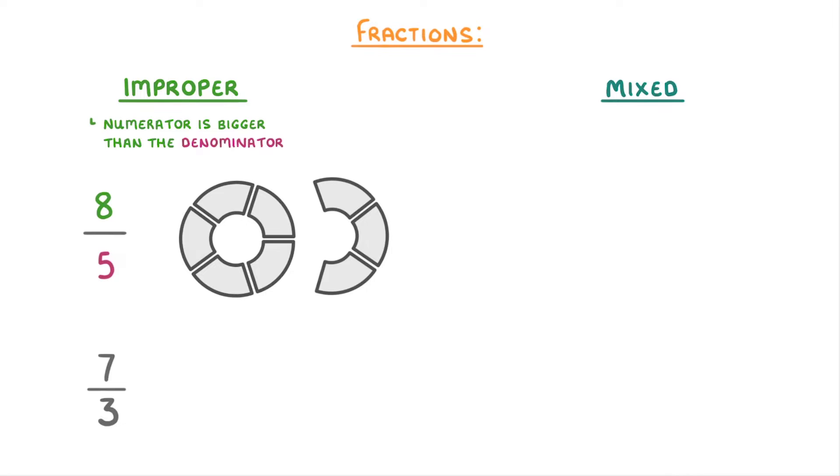Or if we wanted to show seven-thirds, we'd split the donut into three so that we get thirds, and then need four extra pieces so that we had seven of these thirds in total.